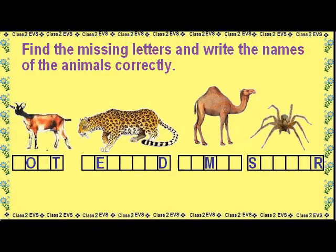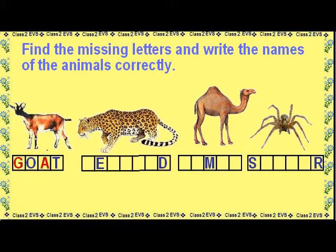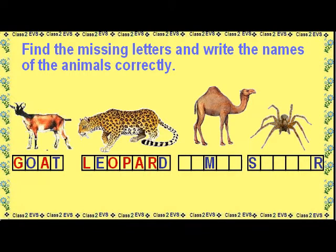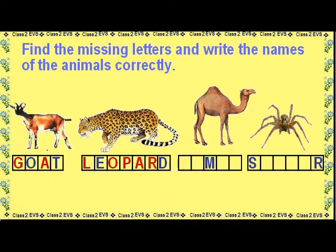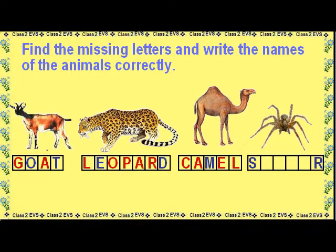Find the missing letters and write the names of the animals correctly. The missing letters in goat are G and A. The missing letters in leopard are L, O, P, A and R. The missing letters in camel are C, A, E and L. The missing letters in spider are P, I, D and E.